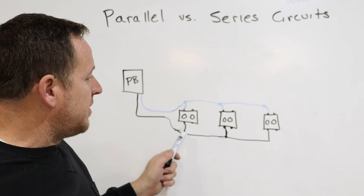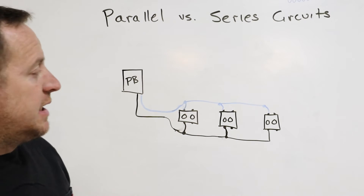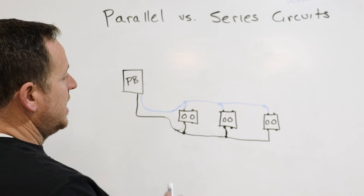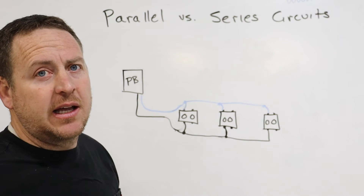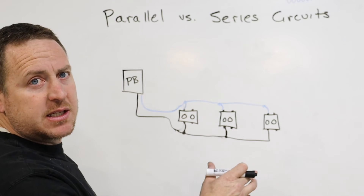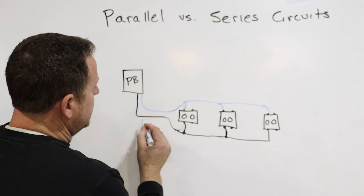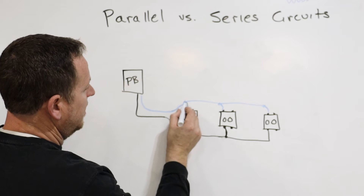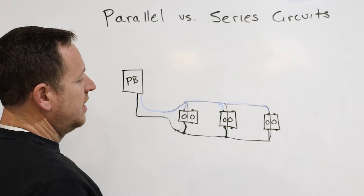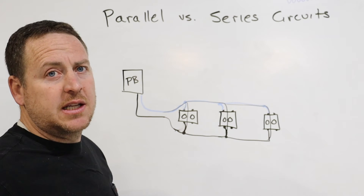Your hot wire comes over, gets wired under the pigtail, powers the first outlet, then continues on to power the second outlet, and continues on to power the third outlet. If one outlet stops working, it's not going to take out every other outlet — it's not like the old Christmas bulbs where one device goes out and they all go out. What that means is we have a completed circuit here, a completed circuit here, and a completed circuit here.